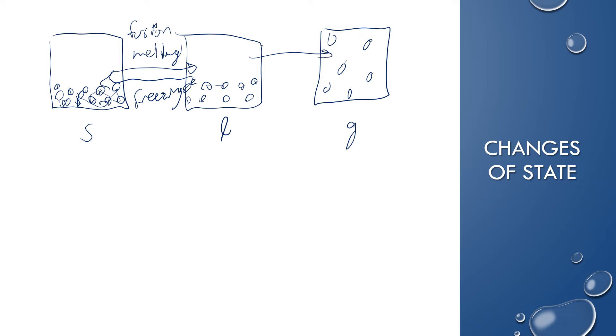Liquid to a gas is vaporization, which could be evaporation or boiling. Boiling requires specific conditions that the vapor pressure is equal to the external pressure. But vaporization encompasses both terms. And then, when you're going from a gas to a liquid, that's condensation.